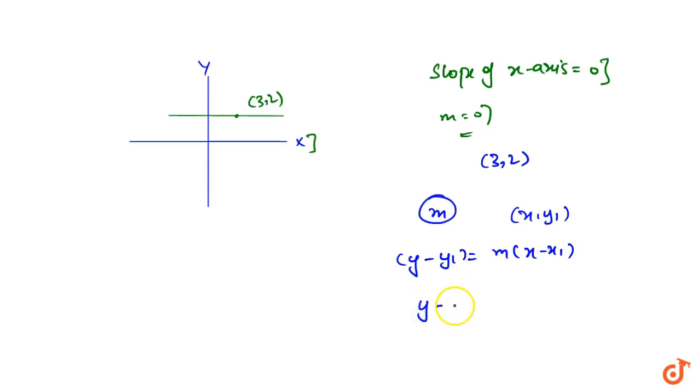So y-point, we have 2 equal to slope 0 into, we have a line equation of y - 2 equal to 0.